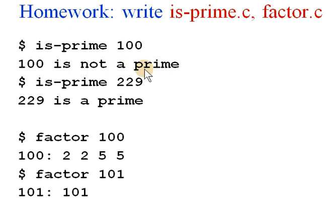Also write a program called is-prime. Give it a number 100, it says 100 is not a prime. And is-prime 229, it says 229 is a prime. Then write the third program factor, which given a number 100, it says 100: 2 2 5 5, these are the factors of 100. And factor 101, which is a single factor, means it's a prime number.